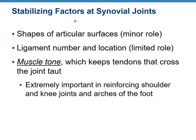Stabilizing factors at synovial joints include: the shape of articular surfaces, ligament number and location, and muscle tone. That's what makes our synovial joints stable. Depending on the shape, a joint can be more or less stable. Muscle tone plays a big role in stabilizing synovial joints — especially important in reinforcing the shoulder and knee joint and arches of the foot.